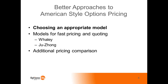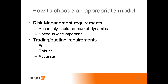Let's start with how we might choose a model for our purposes. If we're doing risk management, we'll be more concerned about market dynamics — how well a model portrays what will happen with an instrument over time — and speed is less important. You might use a very computationally intensive approach, maybe stochastic vol. For trading and quoting purposes, though, what's generally more important is a very fast, robust model that works across a wide range of market inputs and is accurate.